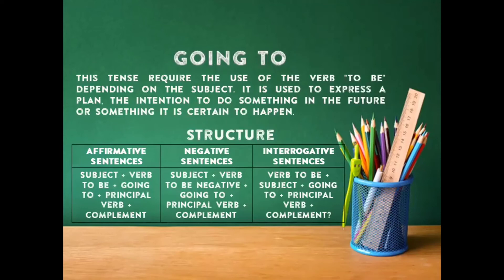Going to. This tense requires the use of the verb to be depending on the subject. It is used to express a plan, the intention to do something in the future, or something that is certain to happen. El going to es un tiempo que tenemos que utilizarlo con el verbo to be, y eso va a depender del sujeto. Expresa un plan o una intención de que necesitas o quieres hacer algo en el futuro, o algo que ciertamente va a pasar. Con la oración afirmativa vamos a colocar un sujeto, el verbo to be dependiendo del sujeto, el going to, el verbo principal en presente y un complemento.